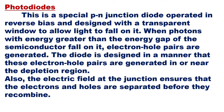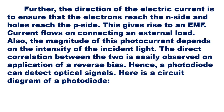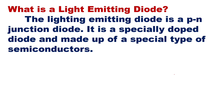The photodiode is a special p-n junction diode operated in reverse bias, designed with a transparent window to allow light to fall on it. When photons with energy greater than the energy gap of the semiconductor fall on it, electron-hole pairs are generated near the depletion region. The electric field at the junction ensures electrons reach the n-side and holes reach the p-side, giving rise to an EMF. The magnitude of the photo current depends on the intensity of incident light, allowing the photodiode to detect optical signals.